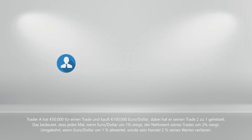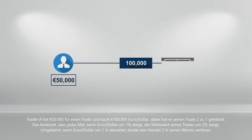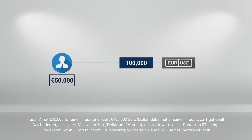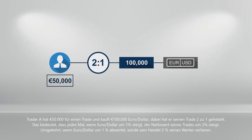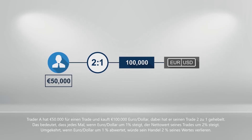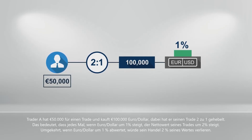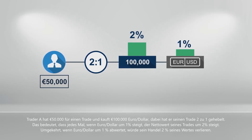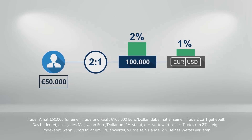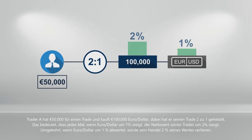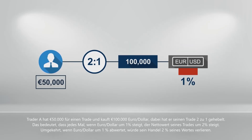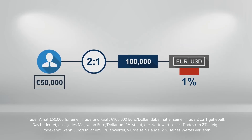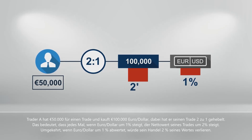Trader A has 50,000 euros for a trade and buys 100,000 euro-dollar. In so doing, he has leveraged his trade 2 to 1. This means that every time euro-dollar appreciates 1%, the net value of his trade will increase by 2%. Conversely, if euro-dollar depreciated by 1%, his trade would lose 2% of its value.